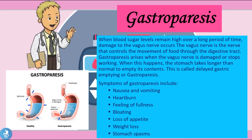The final complication is gastroparesis. When blood sugar levels remain high over a long period of time, damage to the vagus nerve occurs. The vagus nerve controls the movement of food through the digestive tract. When it is damaged or stops working, the stomach takes longer than normal to empty its contents — this is called delayed gastric emptying, or gastroparesis.